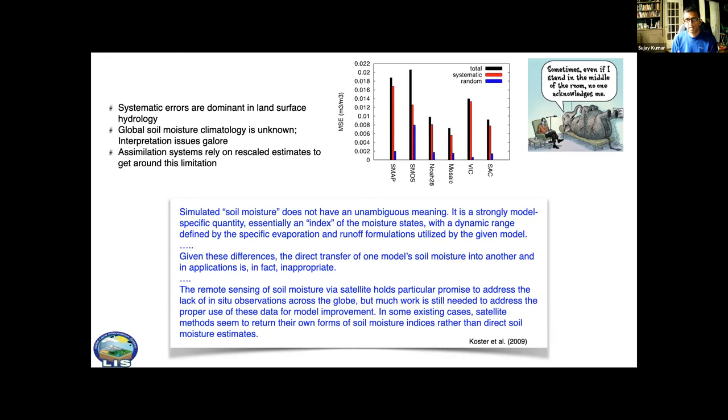This is the chart where we compared and quantified the total error of soil moisture from models and remote sensing data. The blue is the random error component and the red is the systematic error. Both models and remote sensing data show systematic error is much higher than random errors.